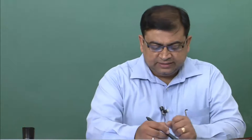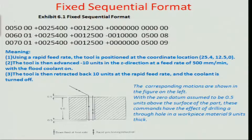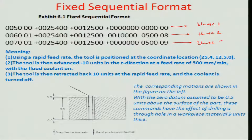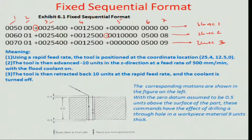In this fixed sequential format you can see that there are many numbers representing different things. We had learned that these are the different blocks and we had also learned that these are the different commands — 1, 2, 3, 4, 5, 6 and 7 commands. There are also positive and negative signs in the different commands, which is an indication of something related to the nomenclature associated with directions, as we discussed last time.